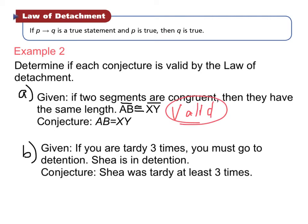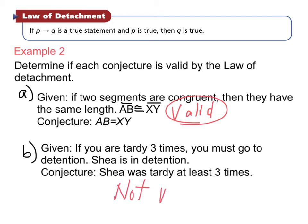Part B — Given: if you are tardy three times, you must go to detention. Shay is in detention. Conjecture: Shay was tardy at least three times. The if-then statement is true, but 'Shay is in detention' matches the conclusion, not the hypothesis. The law of detachment requires P to be true first. Since we only have the conclusion, this is backwards — Shay could be in detention for another reason. This conjecture is not valid.